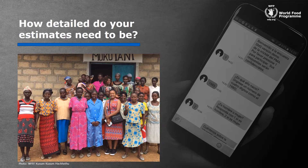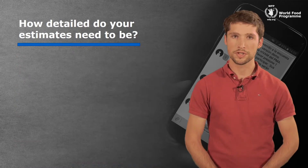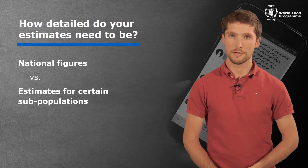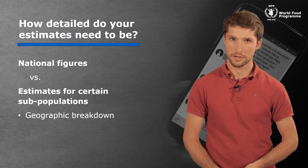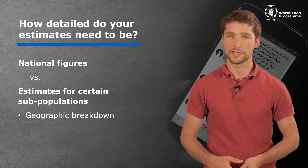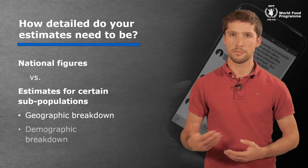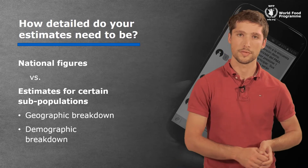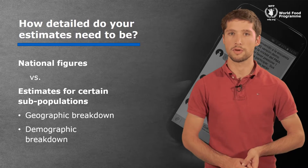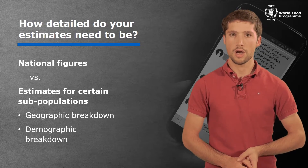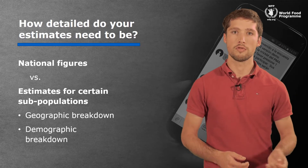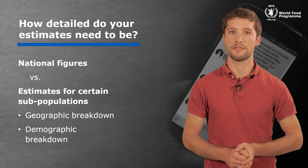Another question to answer is how detailed your estimates need to be. We often want specific estimates for certain subpopulations rather than just national figures. The data could be broken down by geography, with separate estimates for provinces, or by demography, with separate estimates for households led by men and those led by women. Often we need both geographic and demographic breakdowns — a great example is separate estimates for IDPs and non-IDPs within the provinces of a country affected by conflict.